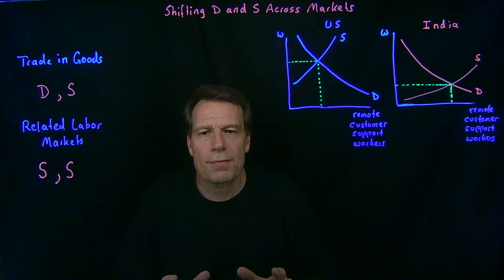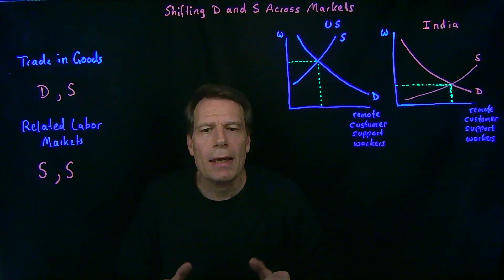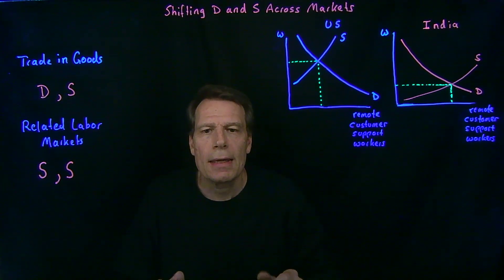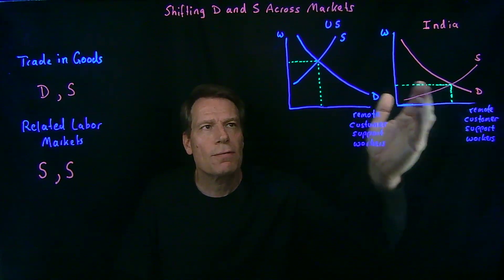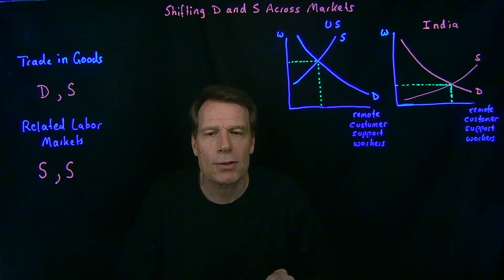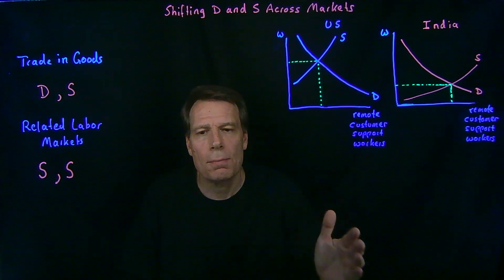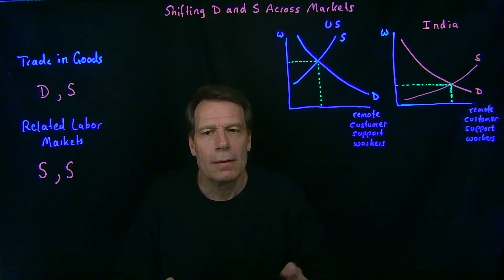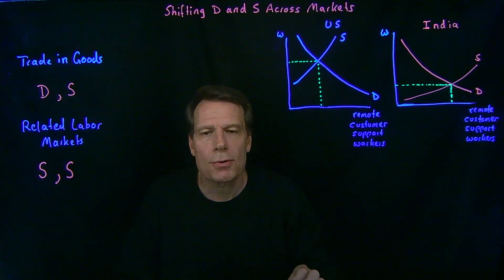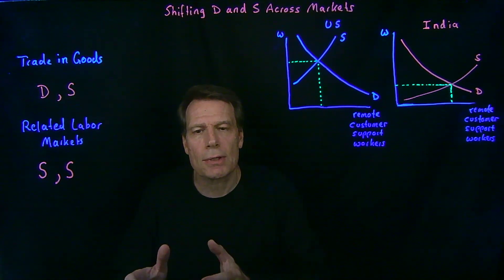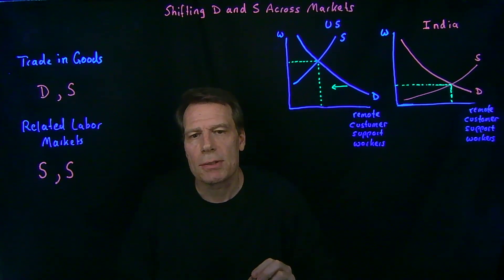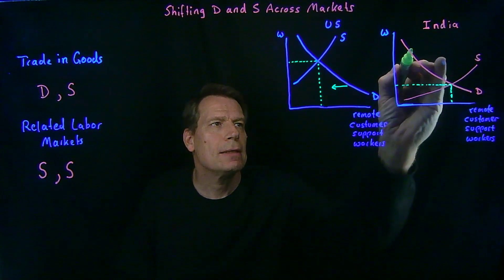So what shifted in these graphs as a result of international phone calls becoming cheaper? Is it the supply curves? The supply curves represent labor offered by households in the two countries. Are Indian workers shifting to the U.S., or U.S. workers shifting to India? The answer is no — it's not like the related labor markets of math teachers and actuaries. Instead, it's the firms demanding the services of these workers that are changing locations. Firms are now setting up call centers in India to answer phone calls from U.S. customers, and as they do that, they are closing call centers in the U.S. So that shifts the demand for U.S. remote customer support workers to the left, and shifts demand in India to the right.